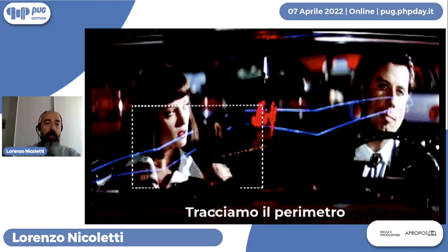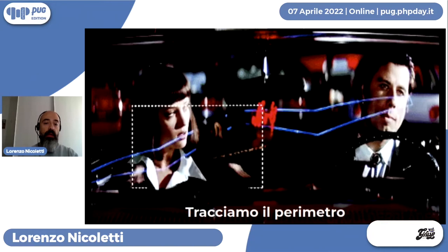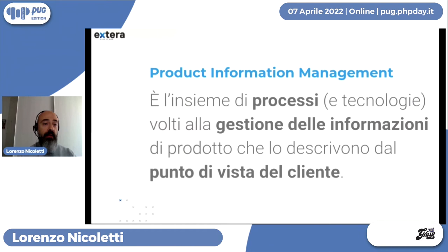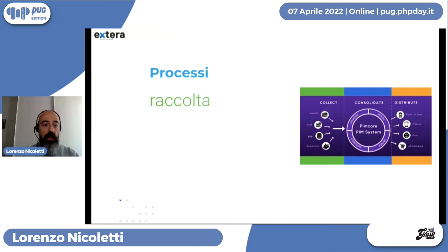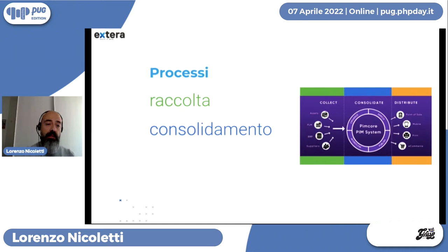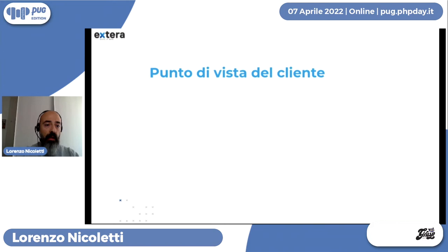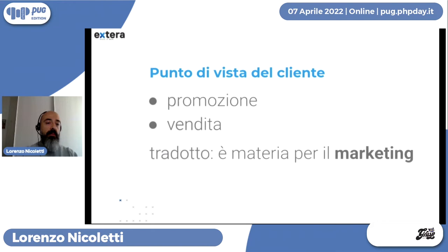Cos'è il PIM? Product Information Management è una disciplina, ovvero un insieme di processi e tecnologie volti alla gestione delle informazioni di prodotto che descrivono il prodotto dal punto di vista del cliente. Tutte le aziende che vendono fanno questa attività; se c'è dietro una disciplina, si chiama PIM. Per processi intendo la raccolta delle informazioni, il consolidamento — costituito dall'arricchimento, dai workflow — e la distribuzione verso i canali di vendita.